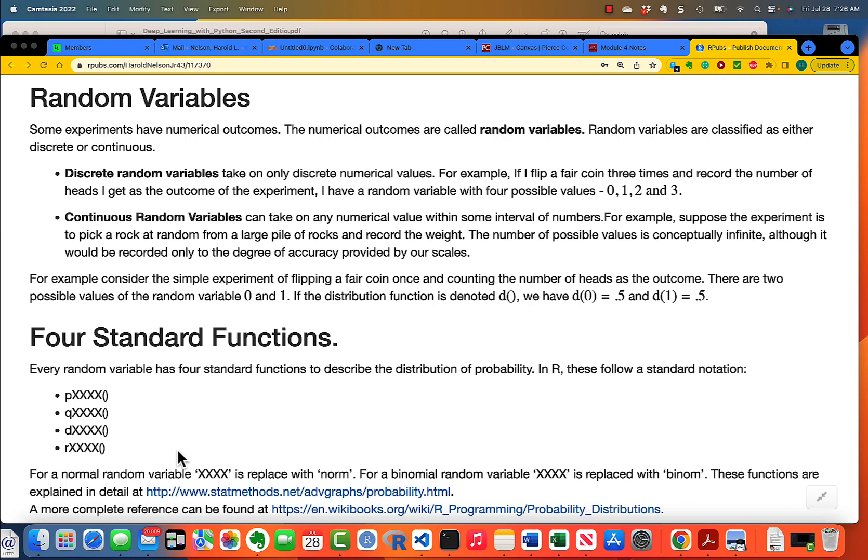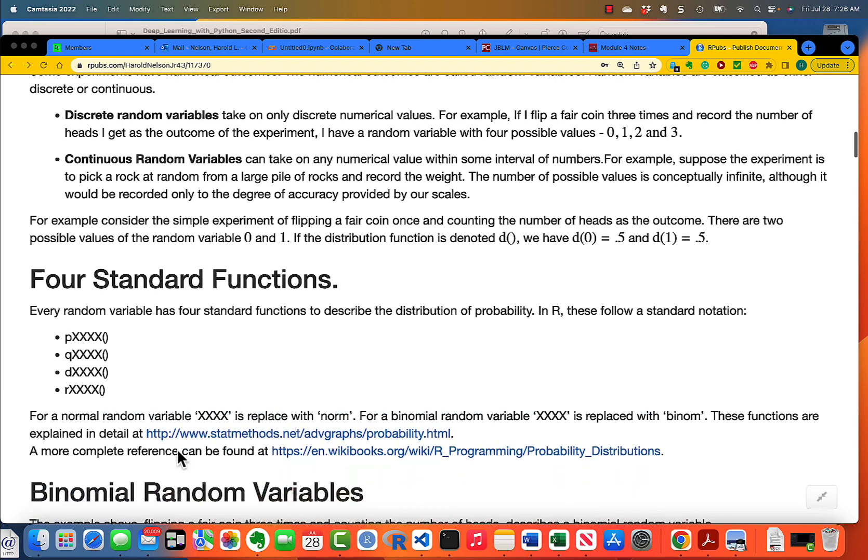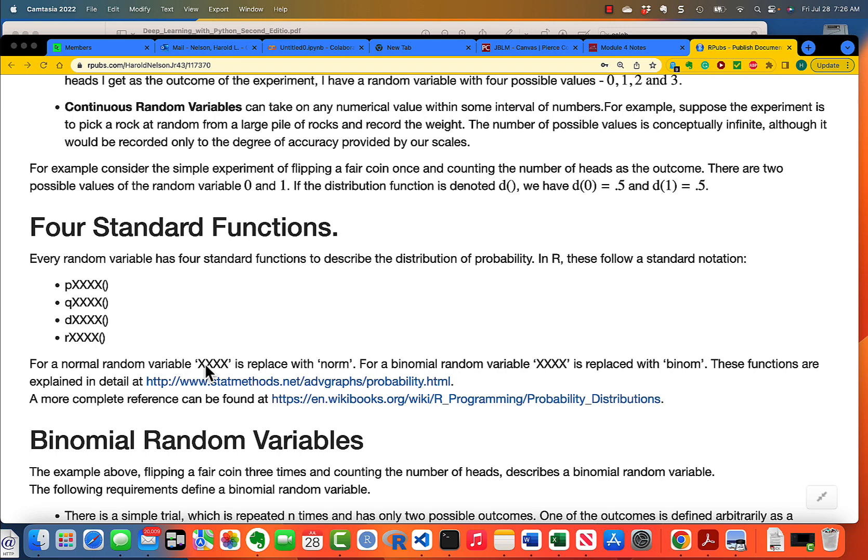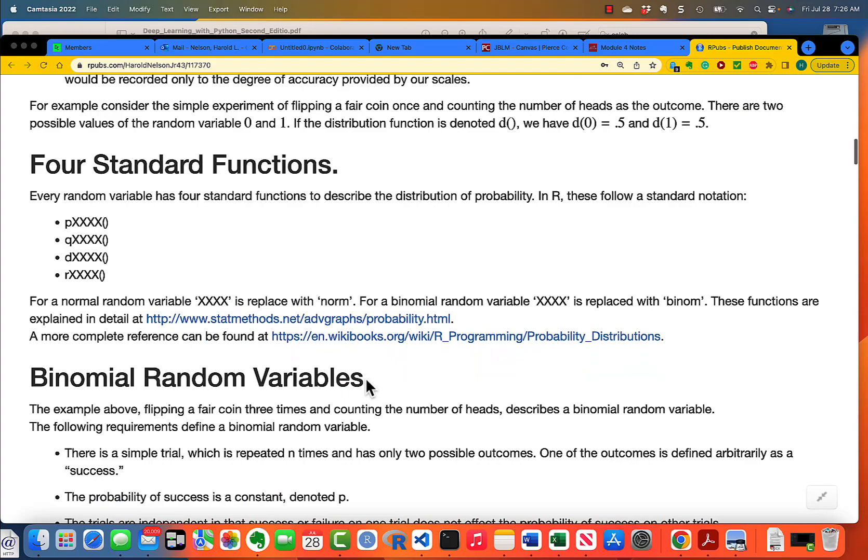Every random variable has four standard functions. The P function, the Q function, the D function, and the R function. And for a normal random variable, XXXX is replaced with NORM. And for a binomial random variable, XXXX is replaced with BINOM. And you can look here, this is a good explanation of all of the different types of functions that you have associated with every random variable.